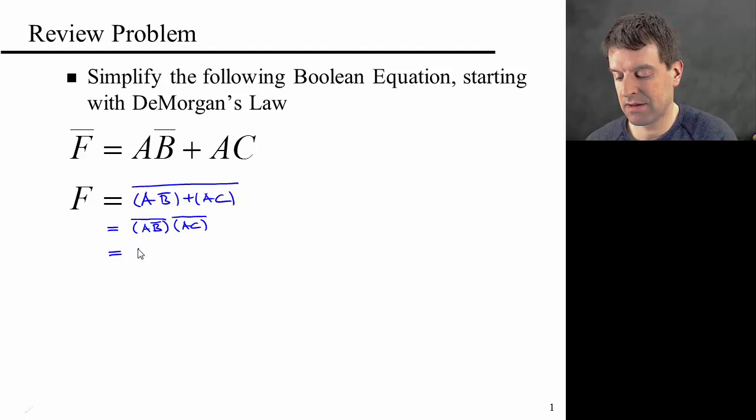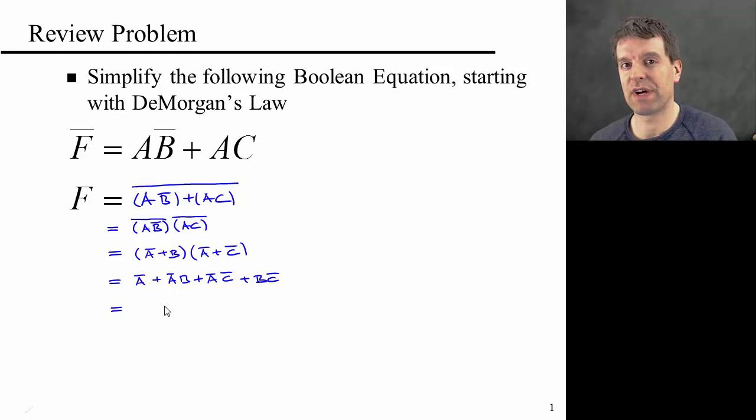I'm going to apply it again. Then this becomes not A or B, and not A or not C. I can multiply this out to get A bar, or A bar B, or A bar C bar, or B C bar, which I can also write as A bar and 1 or B or C bar, which of course 1 or anything is 1. So this is just A bar. That was just a quick reminder of DeMorgan's Law.